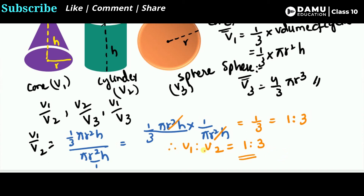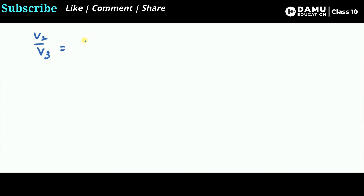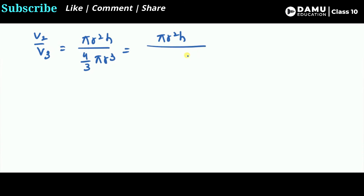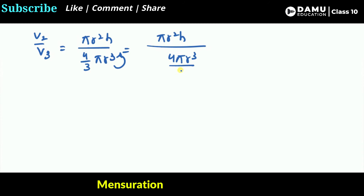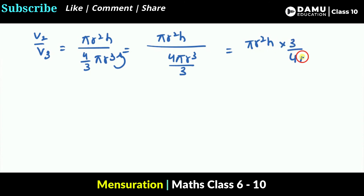Now let's find V2 to V3, cylinder to sphere. V2 is pi r squared h, divided by V3 which is four-thirds pi r cubed. Reciprocating, this becomes pi r squared h multiplied by three over four pi r cubed.